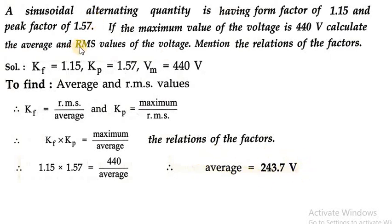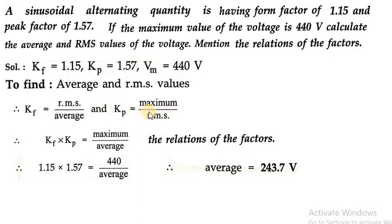Now we are going to find out the second parameter, RMS value. We can find it using either of the two factors. Using Kf: Kf = RMS / average, so RMS = Kf × average. Alternatively using Kp: Kp = maximum / RMS, so RMS = maximum / Kp, where maximum is 440 volt.